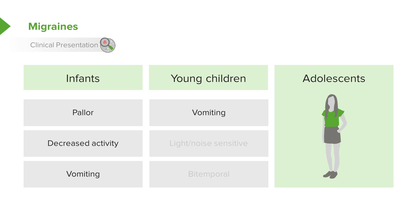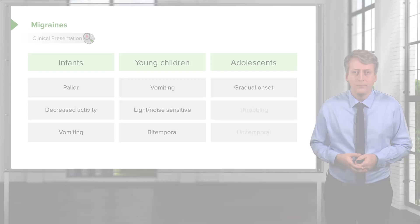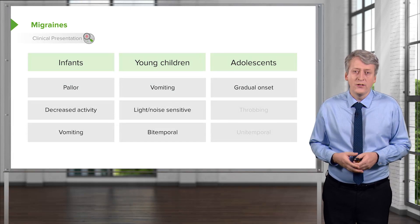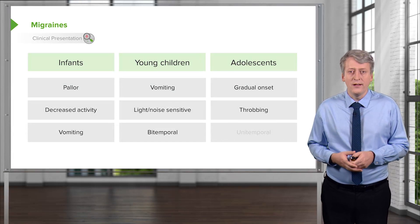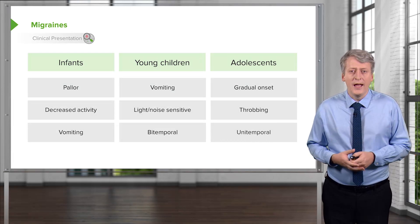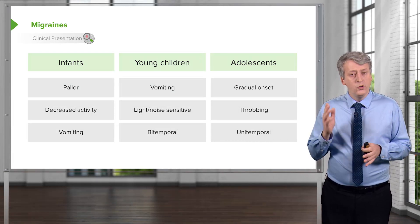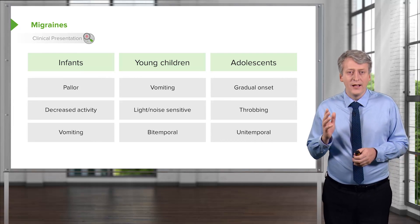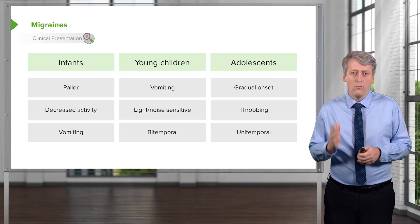In young children, they may develop vomiting in addition to their headache. They may have light or noise sensitivity, and often migraines are bitemporal — so if they're saying there's a focal headache in one spot, that's probably not a migraine. In adolescence, migraines tend to be gradual in onset, tend to be a throbbing headache, and are often unitemporal — they become more unilateral.